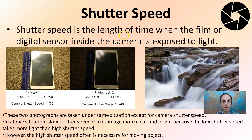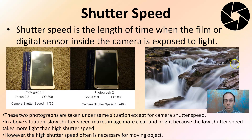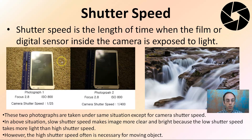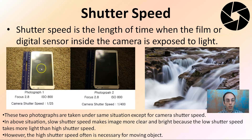Shutter speed is the length of time the film or digital sensor inside the camera is exposed to light. Here we have two images shot with different shutter speeds — one at 1/25th of a second, one at 1/400th. The slow shutter speed makes the image more clear and bright because it takes in more light. In the slower-speed image we can make out one fingerprint, while in the other we can make out that one plus several others, and the ruler is much more clearly visible, giving us a better idea of the object's size.